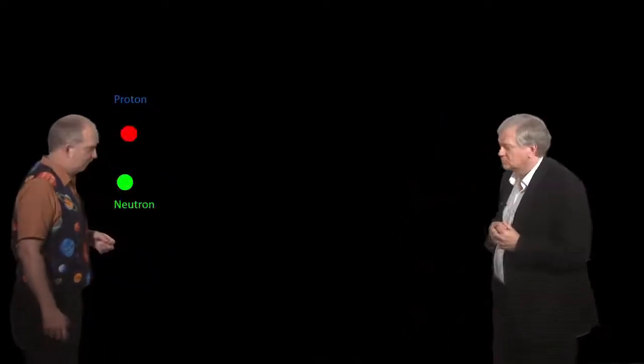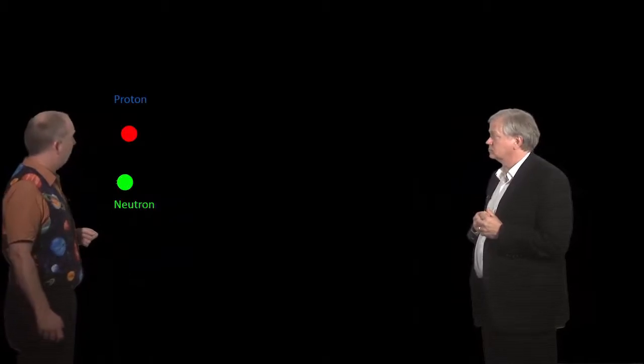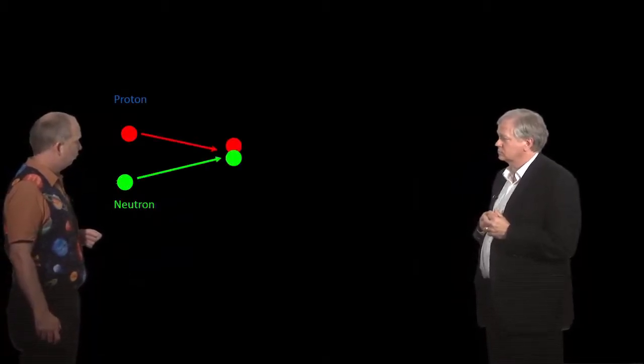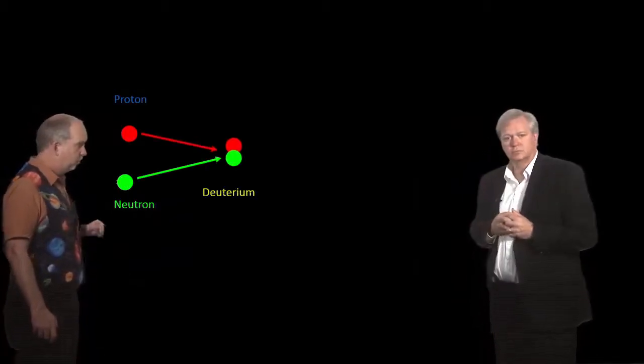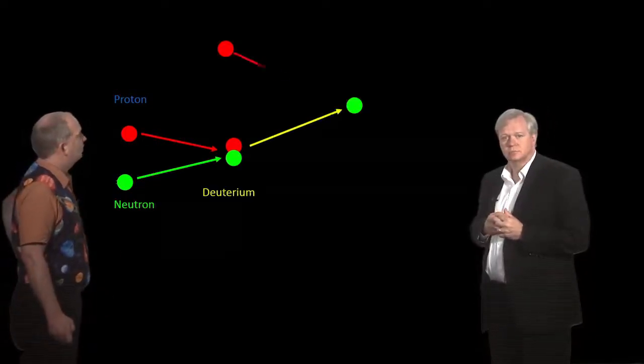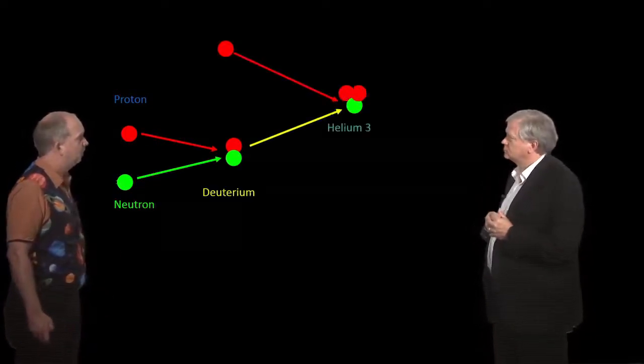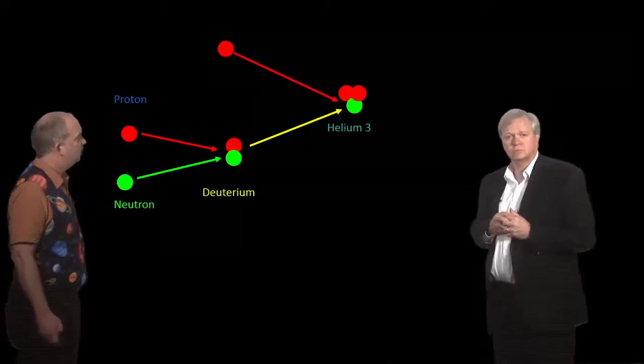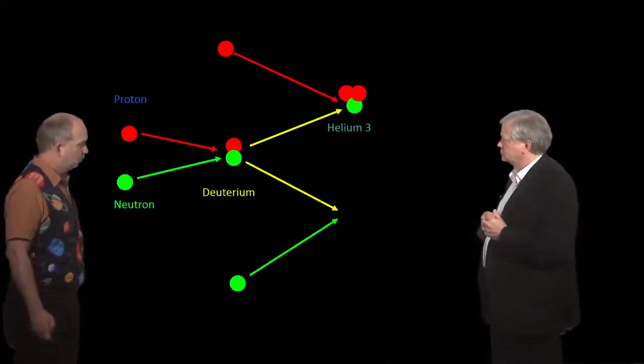And the main reaction going on here is you take protons and neutrons and you combine them to form deuterium. And the deuterium doesn't last very long before something happens to it, it has a number of different pathways, it can go to form helium-3, or it can go to form lithium.